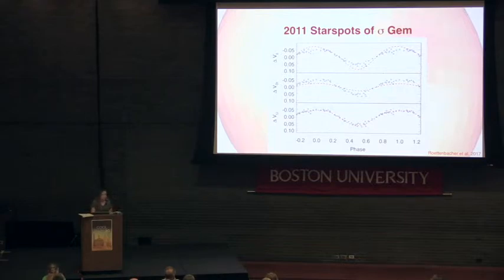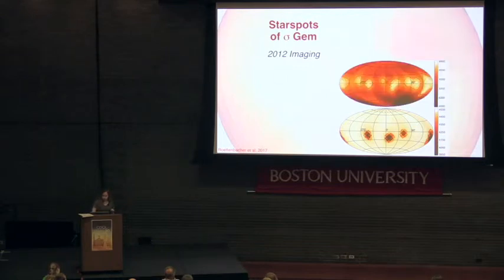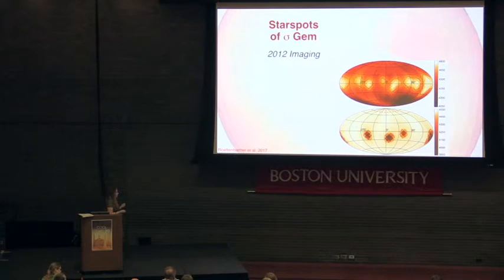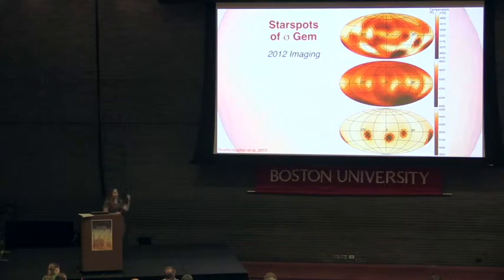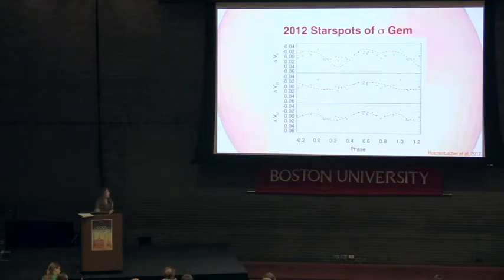We were able to observe Sigma Geminorum again the next year in 2012, and the surface got more complicated. The B and V combined light curve inversion shows high-latitude structure visible in the Doppler imaging but not in the light curve inversion. The interferometric image looks like a combination of the two. When comparing predicted light curves, the interferometry and the light curve inversion give similar shapes, while the Doppler imaging is a little different — helping us understand the strengths and weaknesses of each technique.